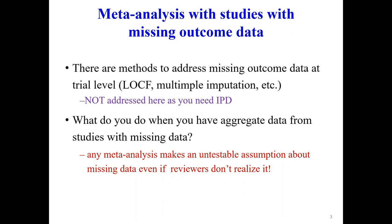We focus on aggregate data meta-analysis. Had we had individual participant data, we could have employed various methods to account for missing data, like multiple imputation or other likelihood methods. But we do not consider that case here. Typically, systematic reviewers assume the missing data problem has been solved at the trial level and proceed with a meta-analysis on available data.